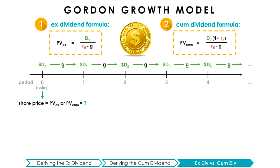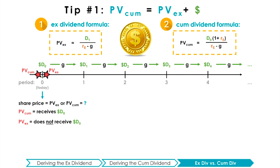To help understand the formulas, think of the ex-dividend and cum-dividend formulas as two sides of the same coin. They both calculate the price of a stock with constantly growing dividends — a common practice for valuing mature firms with stable growth. The key difference is that the cum-dividend formula calculates the present value right before D0 is about to be paid, whereas the ex-dividend formula calculates it right after D0 has been paid. Thus, the cum-dividend present value is greater than the ex-dividend present value, with the difference being the additional dividend today.